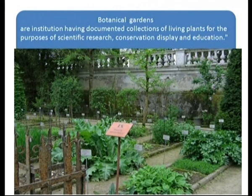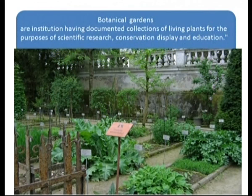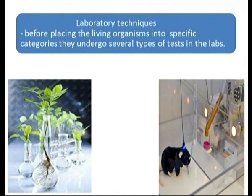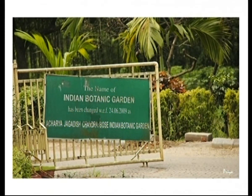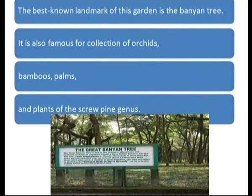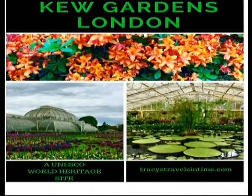Botanical gardens are institutions having documented collections of living plants for the purpose of scientific research, conservation, display, and education. Each plant has slips with its full classification and taxonomy. A famous botanical garden in India is the Indian Botanical Garden in Kolkata, also called the Acharya Jagadish Chandra Bose Botanical Garden, famous for its great banyan tree that spreads over about 500 acres, and for its collections of orchids, bamboos, and pine species.